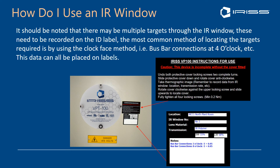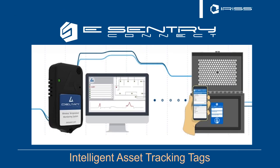Labeling is very important. We tend to use the clock face method, because you can look through one window and have multiple targets. The VPT system comes with instructions for use — put them on there because the guys using the windows may not know how to open and close them. On a written label, you can see details such as location, infrared window number, polymer material, short wave and long wave or mid-wave transmission, and target components — for example, bus bar connections at three o'clock with emissivity 0.95 and at eight o'clock with emissivity 0.95. This keeps that level of control in place.